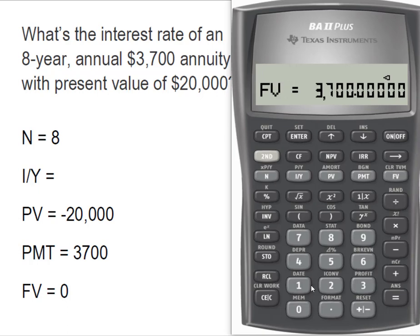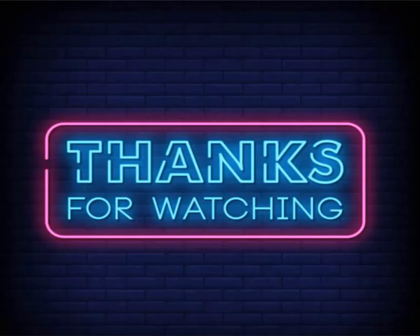We'll set our future value at 0 and compute IY. The BA2 Plus tells us that the interest rate of an 8-year annual $3,700 annuity with a present value of $20,000 is 9.64%. That didn't take very long, but I hope it was helpful. As always, thanks for watching.